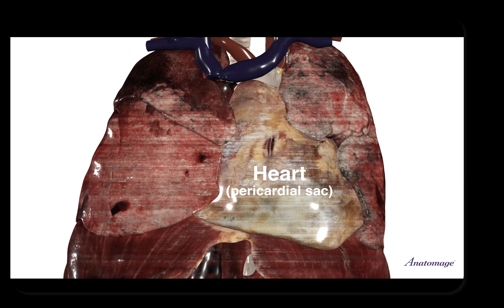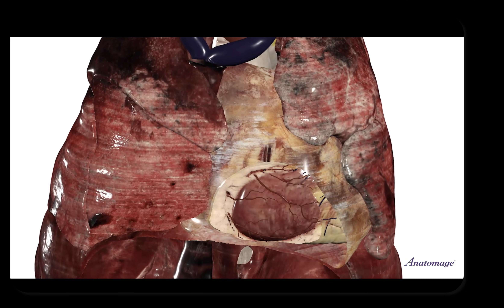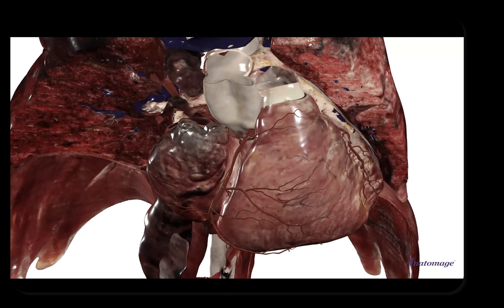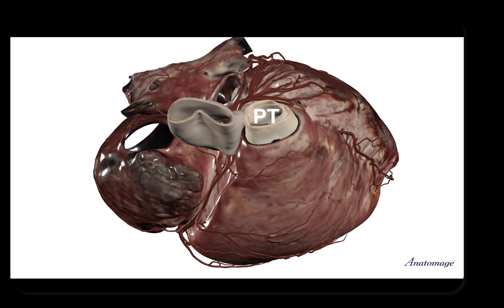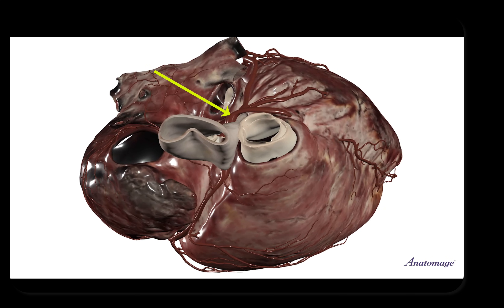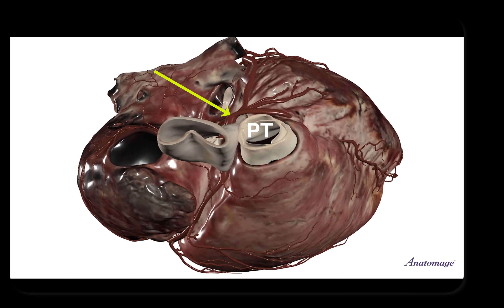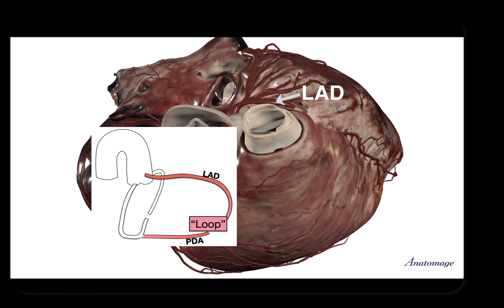Here we have an anterior view of the heart, lungs, and diaphragm. The heart is inside the pericardial sac, so let's dissolve that out of the way as well as the lungs and the diaphragm so that we're just going to see the heart. That is the right atrium, that's the right ventricle, and here's the pulmonary trunk, and here's the ascending aorta. Notice that the left coronary artery courses behind or posterior to the pulmonary trunk. Here we're going to see the right coronary and the left circumflex forming the ring, and there's the LAD that is forming the front of the loop.